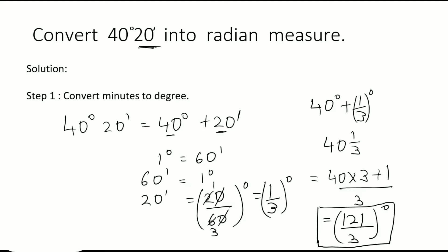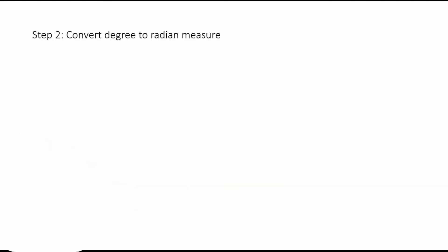This is the solution for the first part where we have converted minutes into degrees, giving us 121/3 degrees. Next, we convert degrees to radians. We know that 180 degrees equals pi radians, so we use 121/3 degrees.